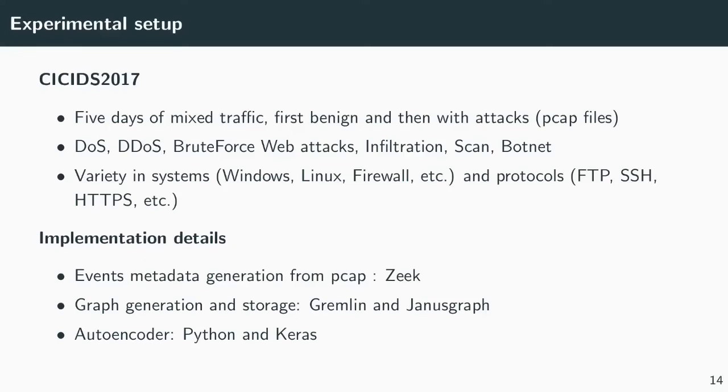We will now present the details of our experimentations and the results of them. We use the CICIDS 2017 dataset for our experimentation. This dataset contains 5 days of network capture from Monday to Friday. Monday contains only normal traffic, while the other days contain both normal traffic and heterogeneous attacks. There are for example DoS, web attacks, botnets. These attacks are carried out on various systems, making this dataset representative of real traffic. From the capture file, we use Zeek to generate the event logs. For graph generation and storage, we use Graphene and JanusGraph. Finally, the autoencoder has been implemented with the Keras library of TensorFlow. We are also conducting new experiments on the more recent and even more realistic dataset CICIDS 2018.